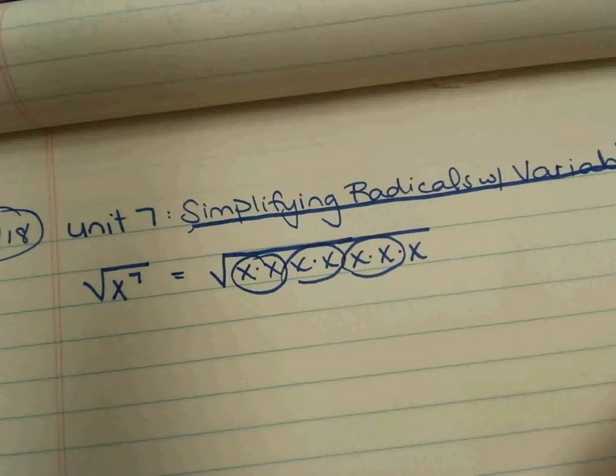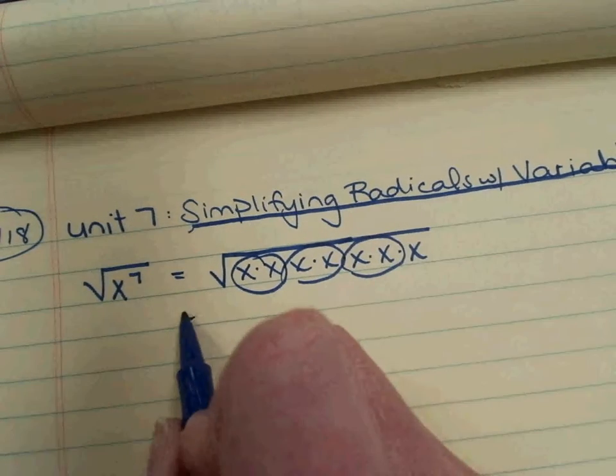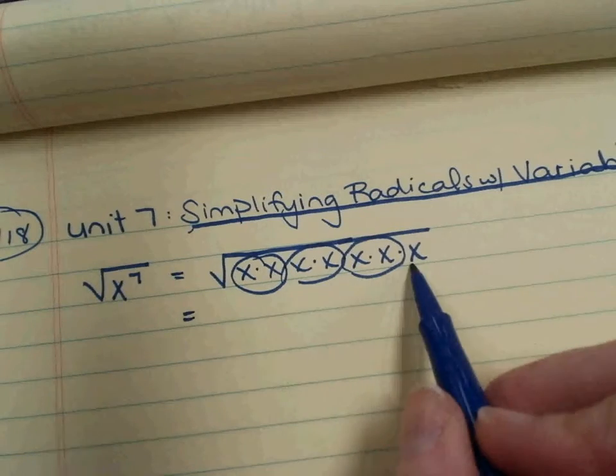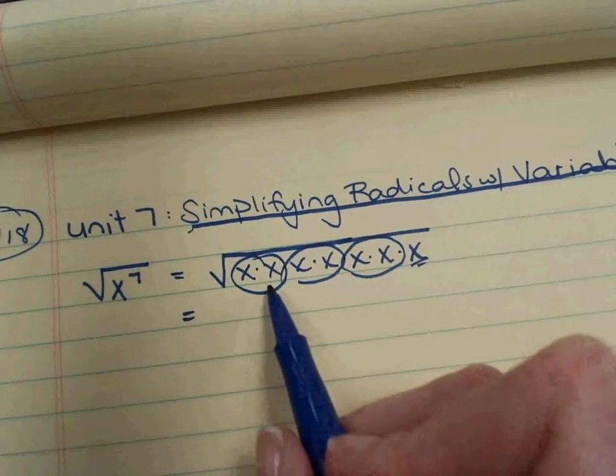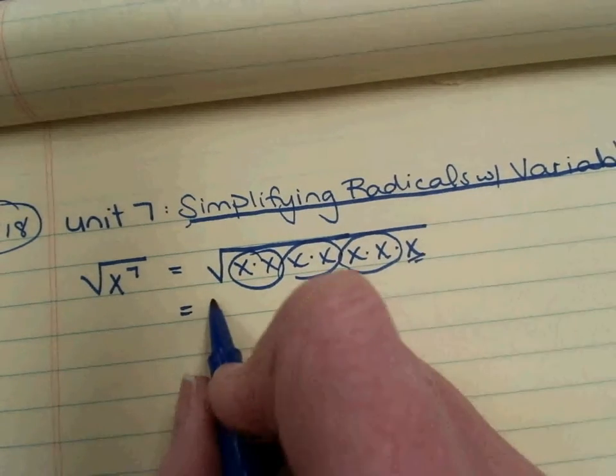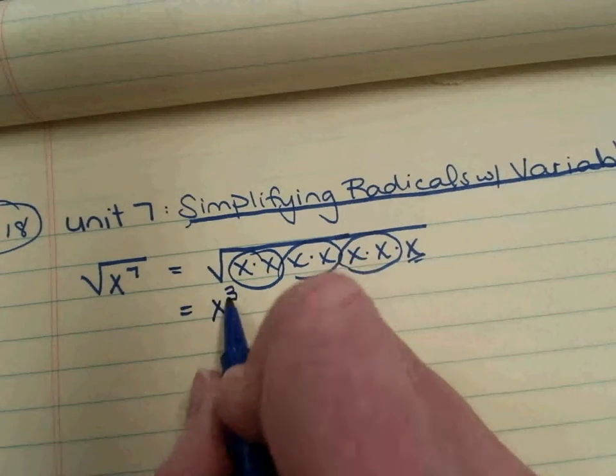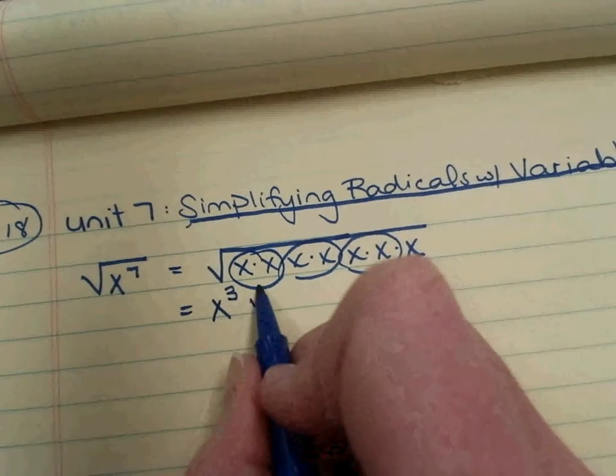And one left over, right, so the three pairs come out of the radical, break free from the jail as an x cubed, and the left over x stays underneath.